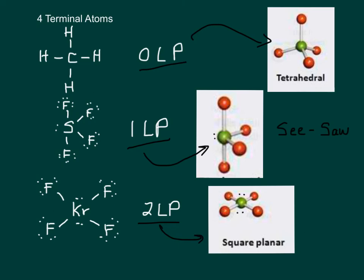Tetrahedral, we already did, is 109.5 degrees. Seesaw, there's actually three different angles in there. There's a 90, a 120, and a 180. Let's see if you can see them. There's the 180, there's the 90, and between these two is 120. And for square planar, you've got 90 degrees and 180 degrees.